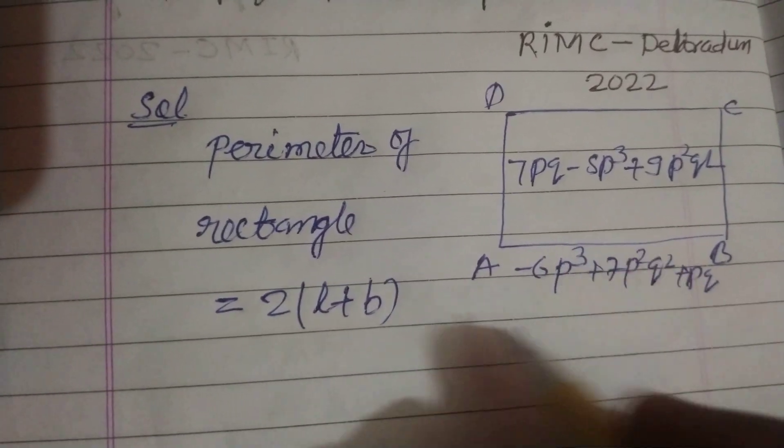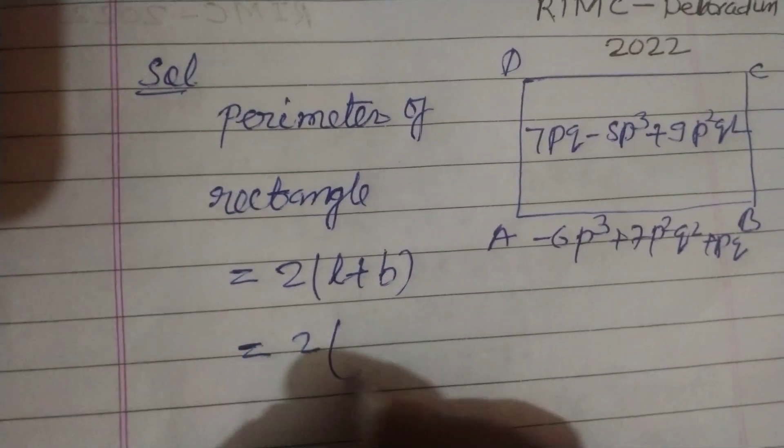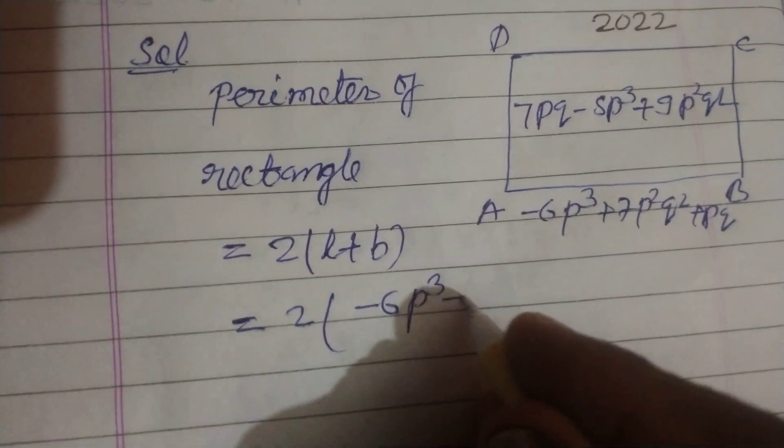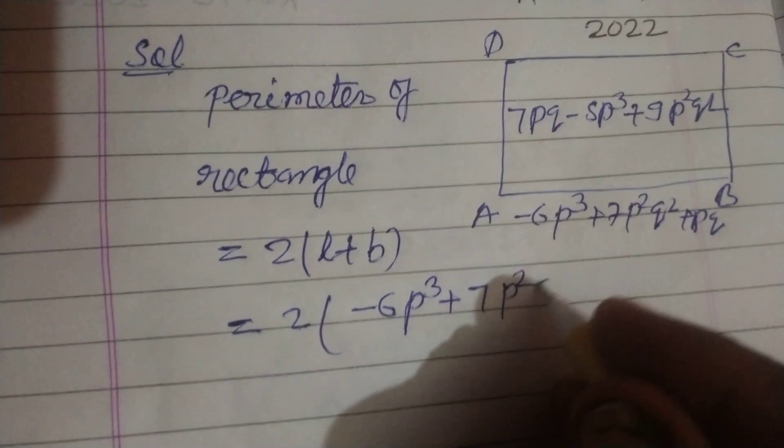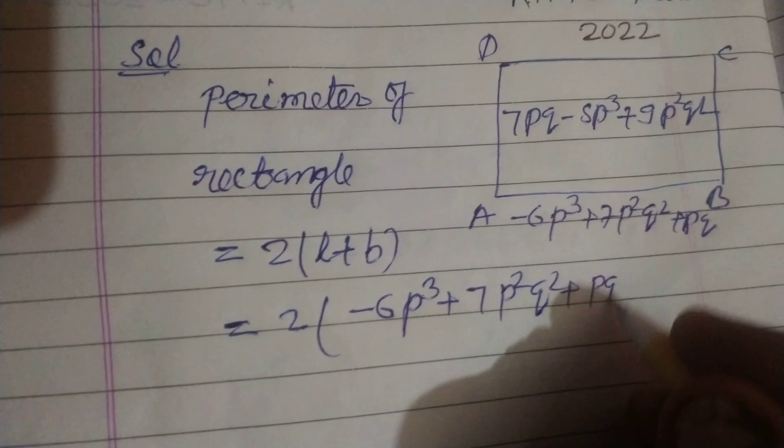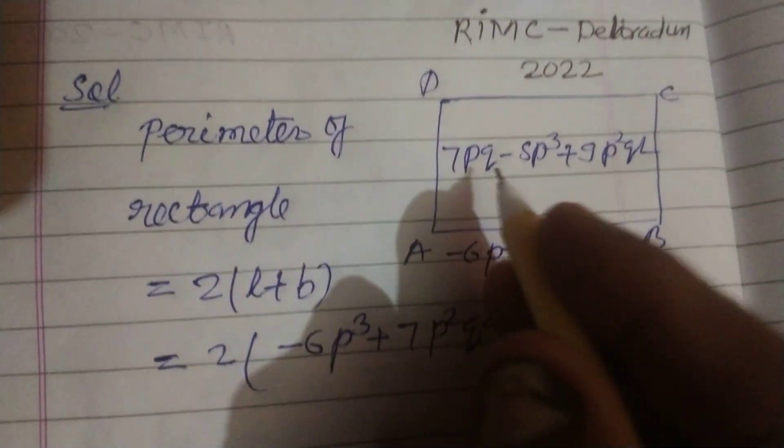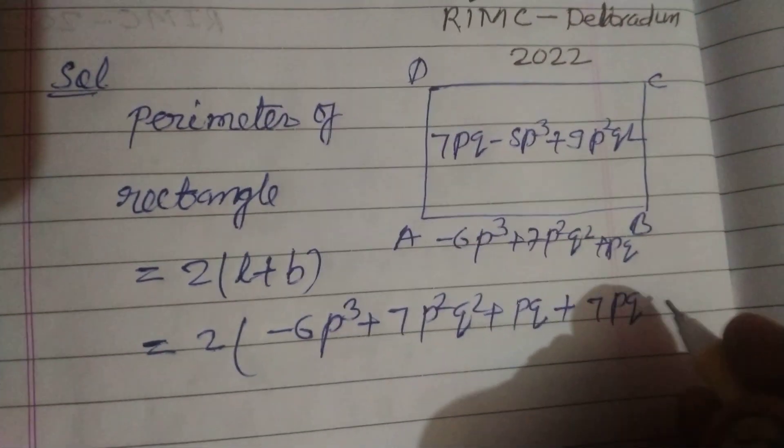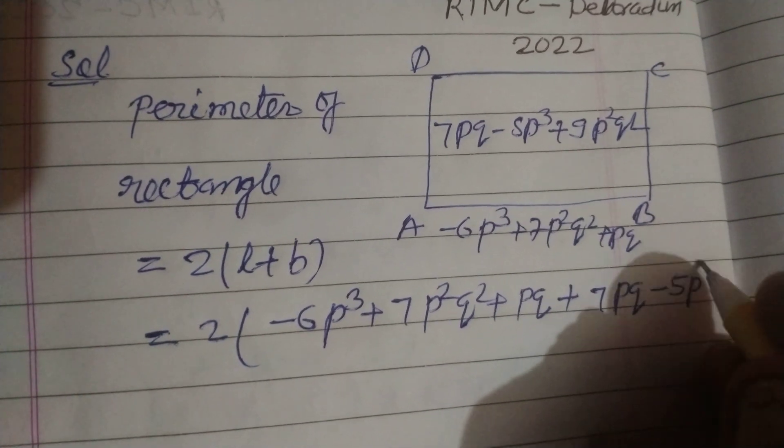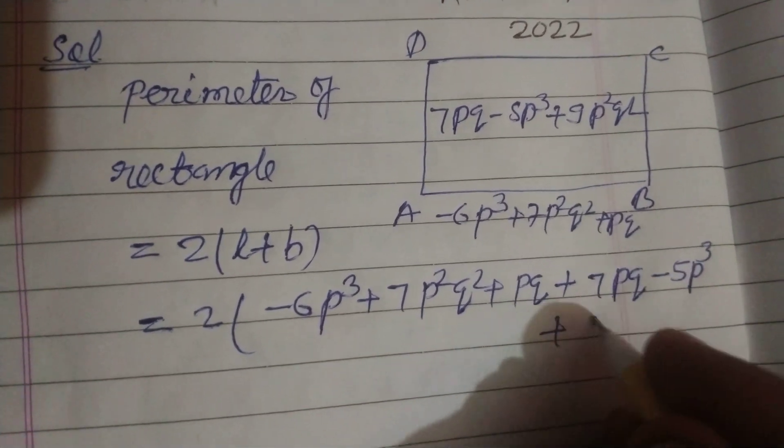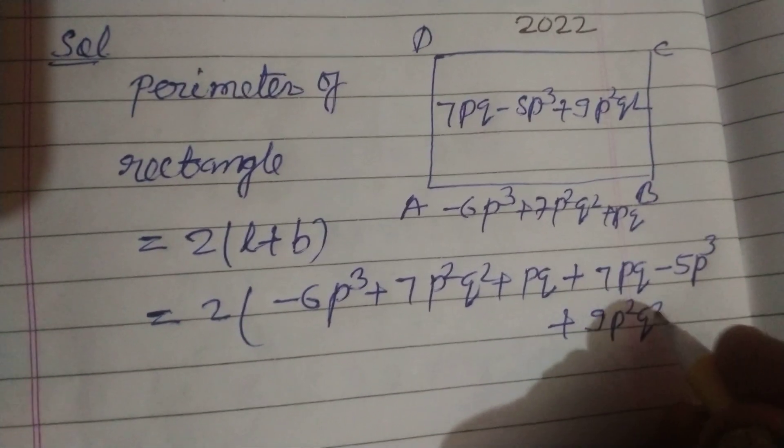Here length AB is given as -6PQ + 7P²Q² + PQ, and breadth is 7PQ - 5P³ + 9P²Q².